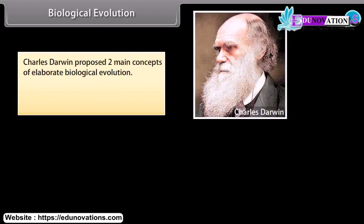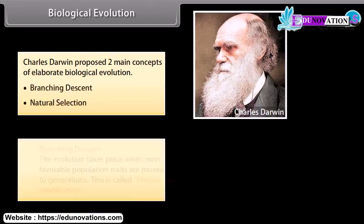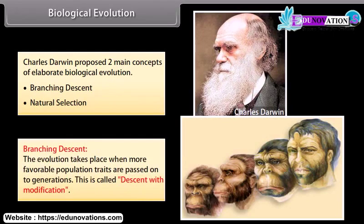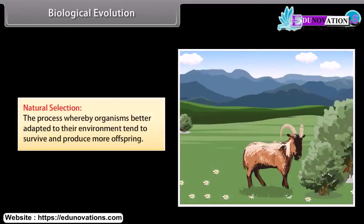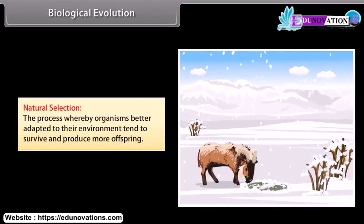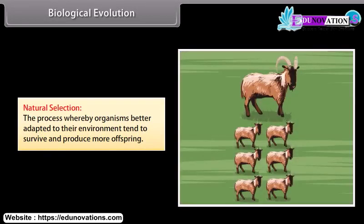Charles Darwin proposed two main concepts of biological evolution: 1. Branching descent — the evolution takes place when more favorable population traits are passed on to generations, called descent with modification. 2. Natural selection — the process whereby organisms better adapted to their environment tend to survive and produce more offspring.